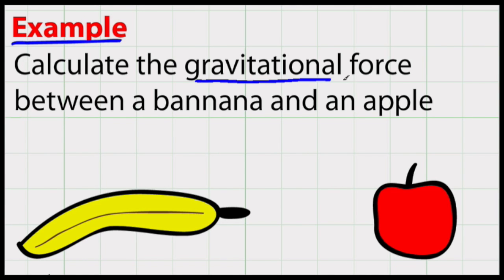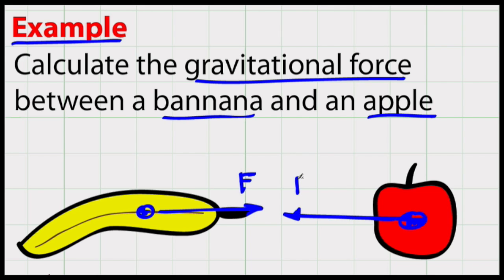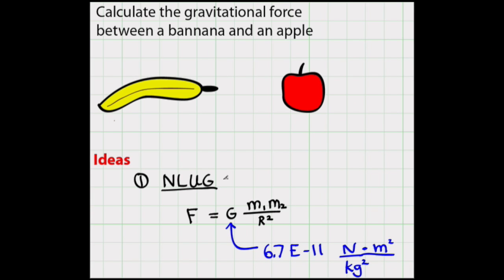Calculate the gravitational force between a banana and an apple. So according to Newton's law of universal gravitation, there's a force acting on the banana from the apple, force like that. And similarly, there's a force of the banana pulling on the apple, that's equal in magnitude, opposite in direction, and collinear. And our goal is to calculate the magnitude of this force.